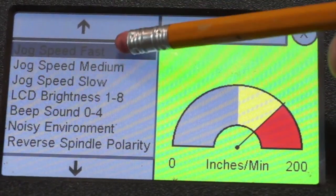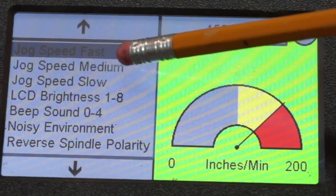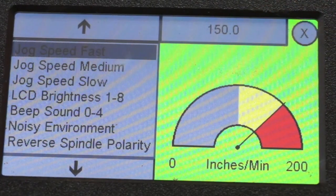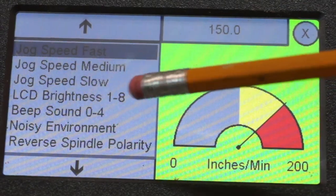And there it is. So I can change my jog speed fast, jog speed medium, and jog speed slow simply by changing that. I can also change the brightness.